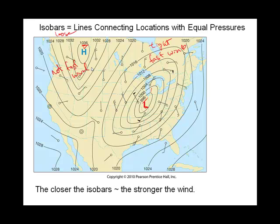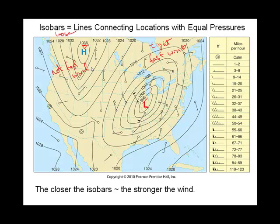We talked earlier about station models. One of the things station models tell us is specifically about wind. The direction of the flag shows which way the wind is blowing, and the number of tails on the flag shows how fast the wind is blowing. Comparing examples: one location looks like 61 to 66 miles per hour, versus another location with two flag tails — about 21 to 25 miles per hour.